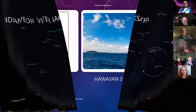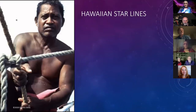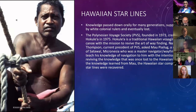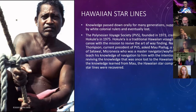Let's go way around the world to Hawaiian wayfinding — related to that Maori material. This is knowledge passed on orally for many generations, suppressed by white colonial rulers, and eventually lost. The Polynesian Voyage Society from 1973 created Hokulea, a traditional Hawaiian voyaging canoe with a mission to revive the art of wayfinding. They found Nainoa Thompson — current president of the PBS — who found Mau Piailug, a native of Satawal, Micronesia, who was a master navigator and wayfinder. With his help, they recovered the Hawaiian star compass and the star lines.